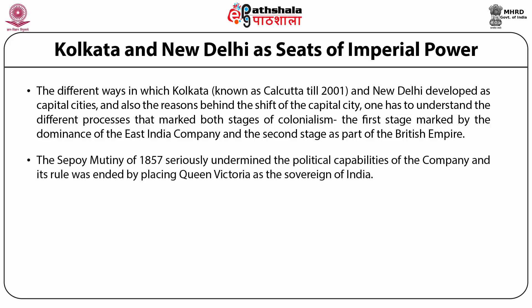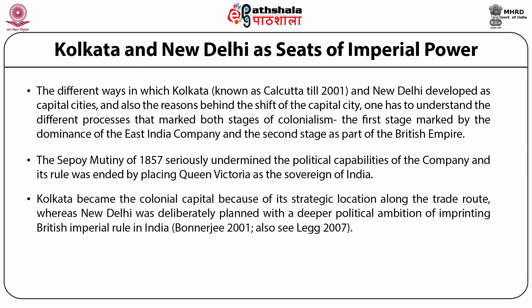The Sepoy Mutiny of 1857 seriously undermined the political capabilities of the Company and its rule, which was ended by placing Queen Victoria as the sovereign of India. From this point onward, an imperialist ideology was used as a political symbol of control and rule. Urban planning was used extensively to translate the political symbols of imperialism into visible form. Kolkata became the colonial capital because of its strategic location along trade routes, whereas New Delhi was deliberately planned with a deeper political ambition of imprinting British imperial rule in India. However, there are contrasting ideas and opinions that exist about the level of planning intervention in Kolkata.